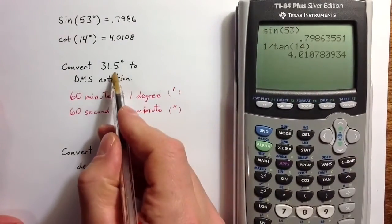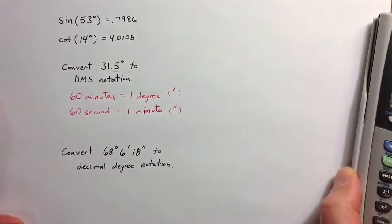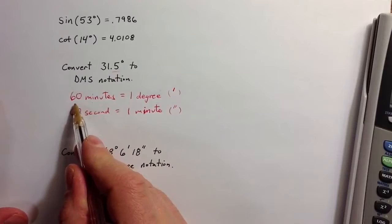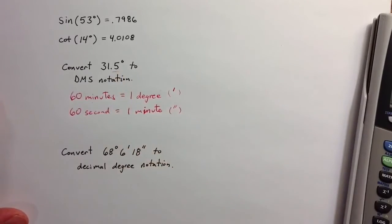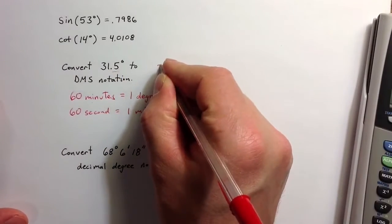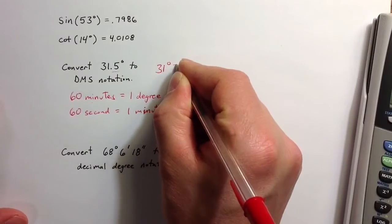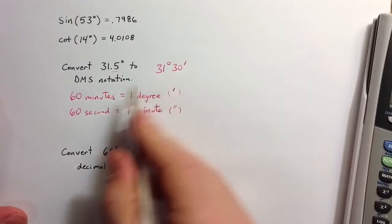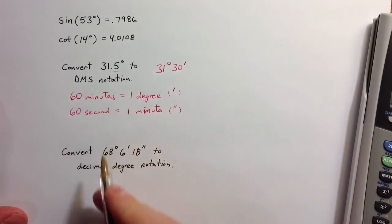Without a calculator, we see that half of a degree, .5, if there are 60 minutes in a degree, that means that 31.5 could be written as 31 degrees and 30 minutes, because 30 would be half of the minutes that it takes to get to a degree.